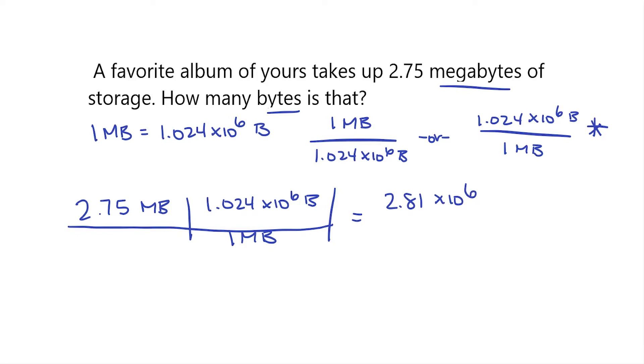Next I have to multiply my units, so megabytes times bytes, and then all of this will be over my 1 megabyte. Now since I have megabytes in the top and the bottom, these are going to cancel each other out, leaving me only with units of bytes. So 2.81 times 10 to the 6 divided by 1 is 2.81 times 10 to the 6, and then my units will be bytes.